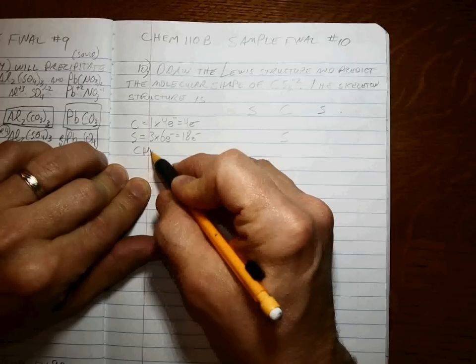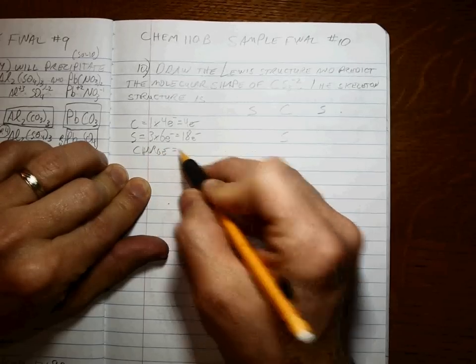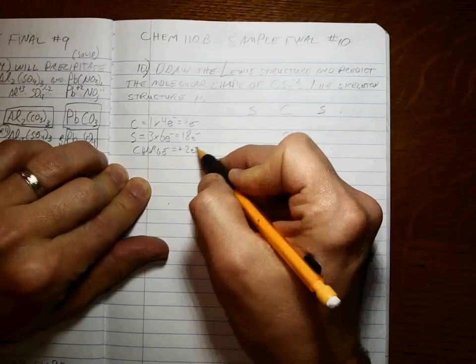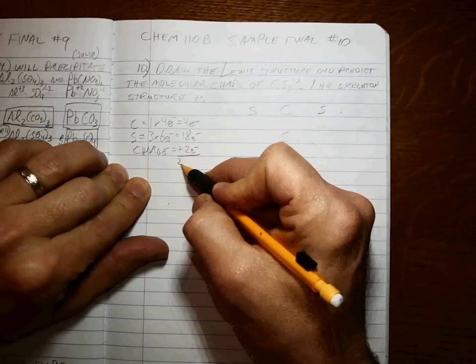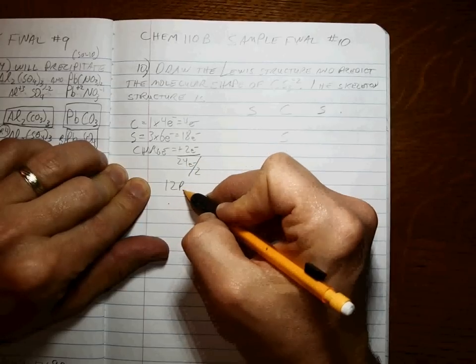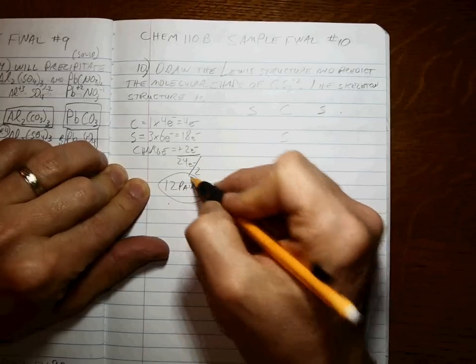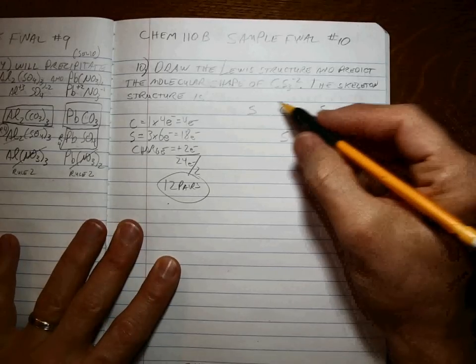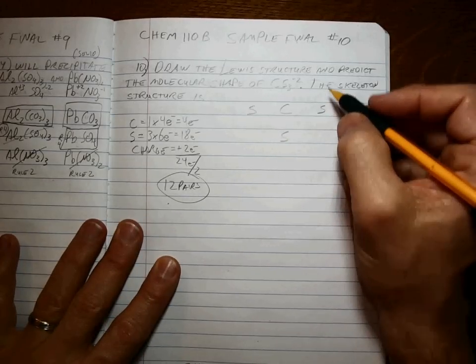And you have to remember that the charge is a minus 2, which means we're adding two electrons because we've got two more negatives, so that's 24 electrons divided by 2, is a dozen pairs, 12 pairs of electrons that have to go around this set of four atoms.